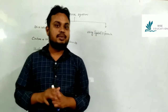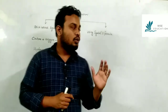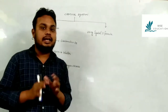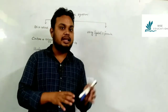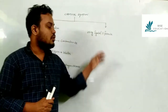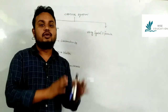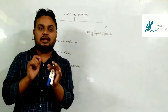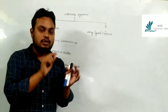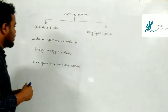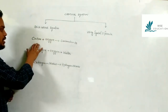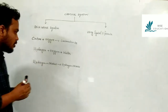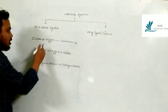Chemical equations can be represented as word equations using formula and symbols. In word equations, reactants and products are written by name, and they are separated by a plus sign. For example, when carbon and oxygen are two reactants, they are joined by a plus.